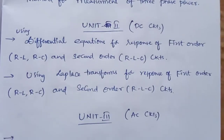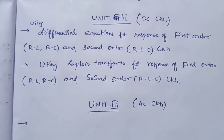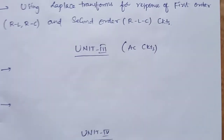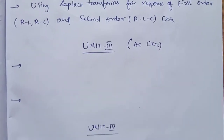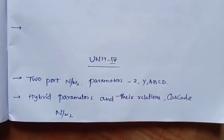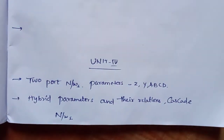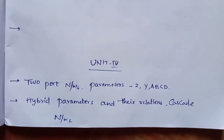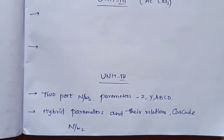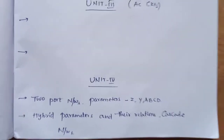For DC circuits and AC circuits, the third unit uses the same concepts for AC circuits. Coming to the fourth unit: two-port network parameters — Z, Y, A, B, C, D — hybrid parameters, their relations, and what we need for the network equations. This concept is very important.